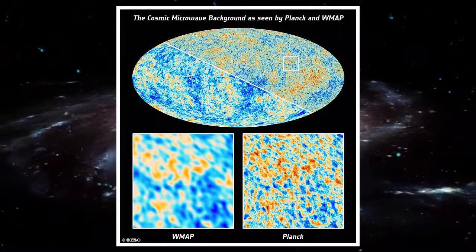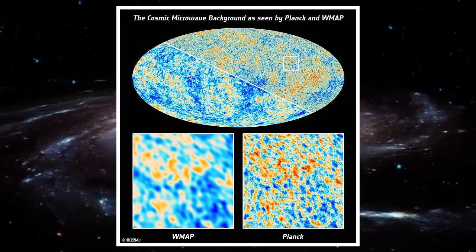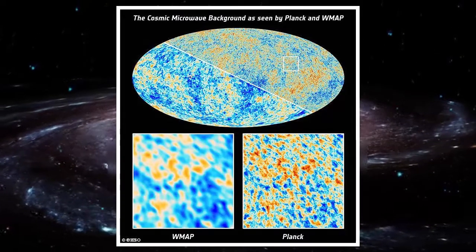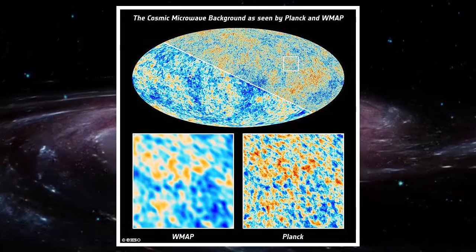For years, scientists have been stumped by the cold spot, which measures around 1.8 billion light-years across. Measurements of the universe's background radiation found this spot is colder than its surroundings.